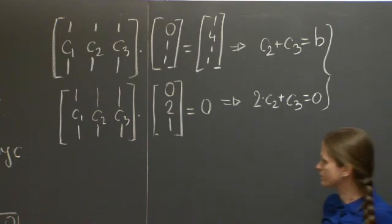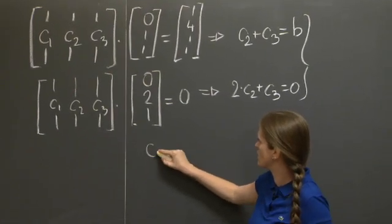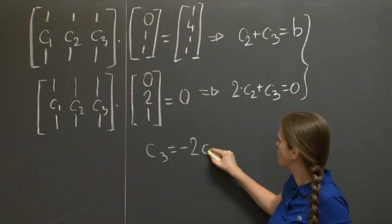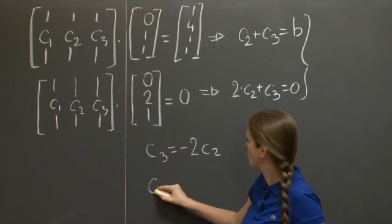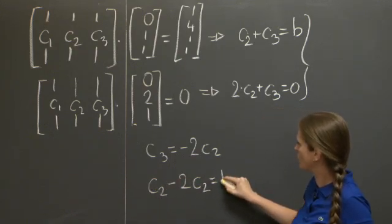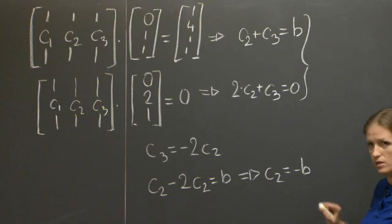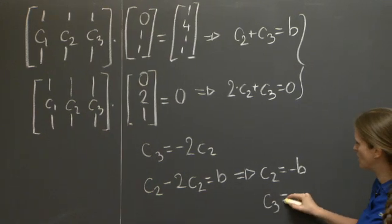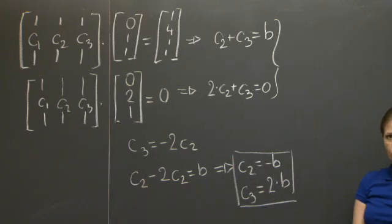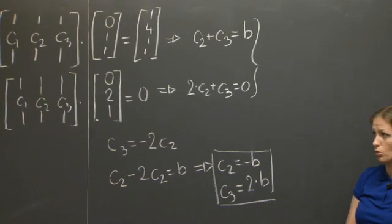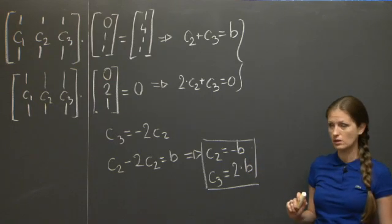Now, solving this system, where the unknowns are vectors, but it's still just a linear system, we can see, for example, from the second equation that C3 equals minus 2 C2, and plugging it back into the original equation, getting C2 minus 2 C2 equals B, from which it follows that C2 is equal to minus B, and that C3 is equal to 2 times B. So from this tiny amount of information, we just knew the solutions to this one particular equation involving A, we got the second column of A and the third column of A completely explicitly calculated.